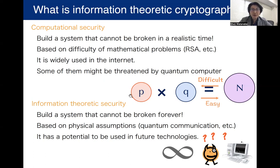On the other hand, in information theoretic security, we try to build a system that cannot be broken forever. Usually, this type of security is based on some physical assumptions such as quantum communication. Even though this type of security is not widely used in current technologies, it has a potential to be used in future technologies.